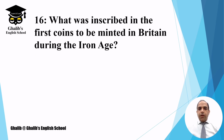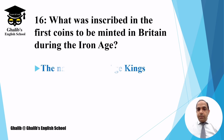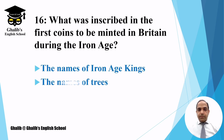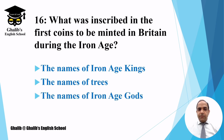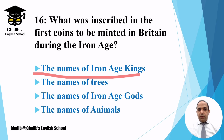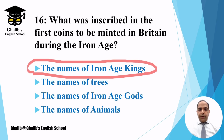Question number sixteen: what was inscribed on the first coins to be minted in Britain during the Iron Age? The options are the names of Iron Age kings, the names of trees, the names of Iron Age gods, or the names of animals. The answer is the names of Iron Age kings were inscribed on those coins.